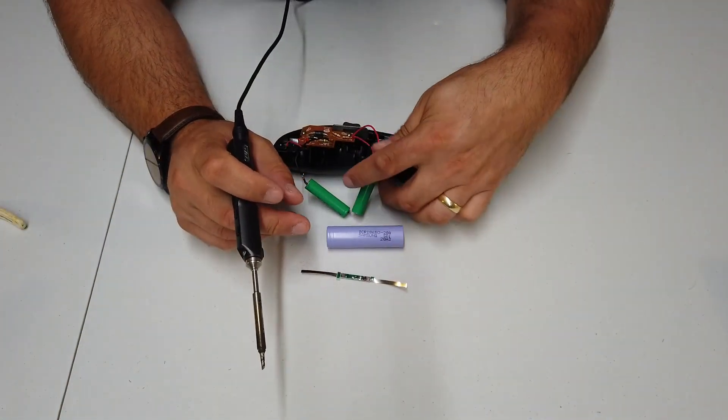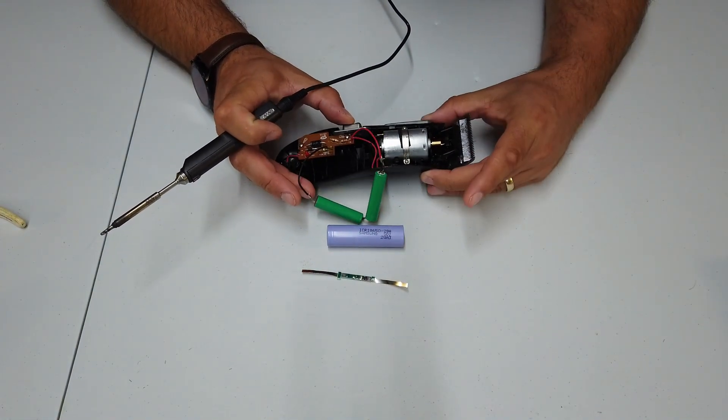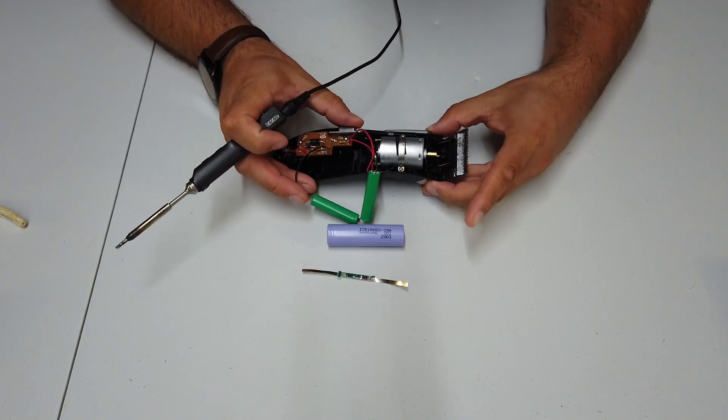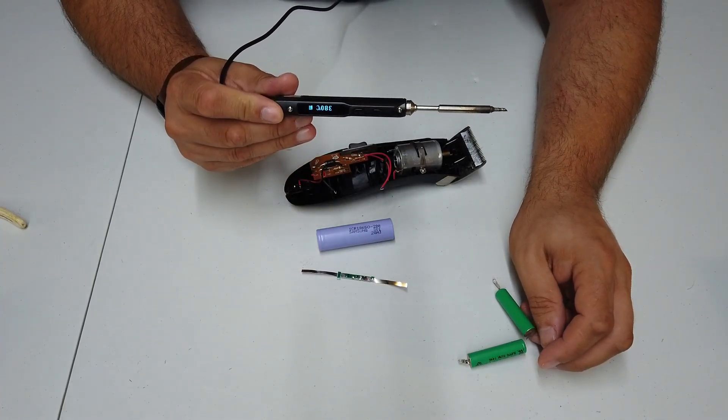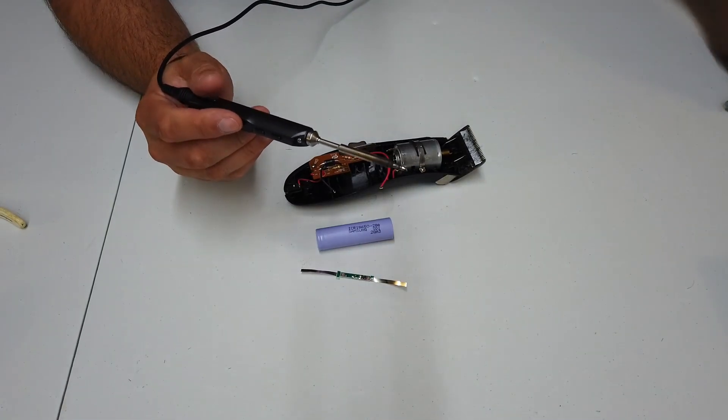The first thing we're going to want to do is get rid of these old batteries. As you can tell, they just don't have much in the way of beans anymore. A little bit of solder. This is a T100 by the way, soldering iron. A little digital soldering iron. It's magnificent. I'm in love with it.